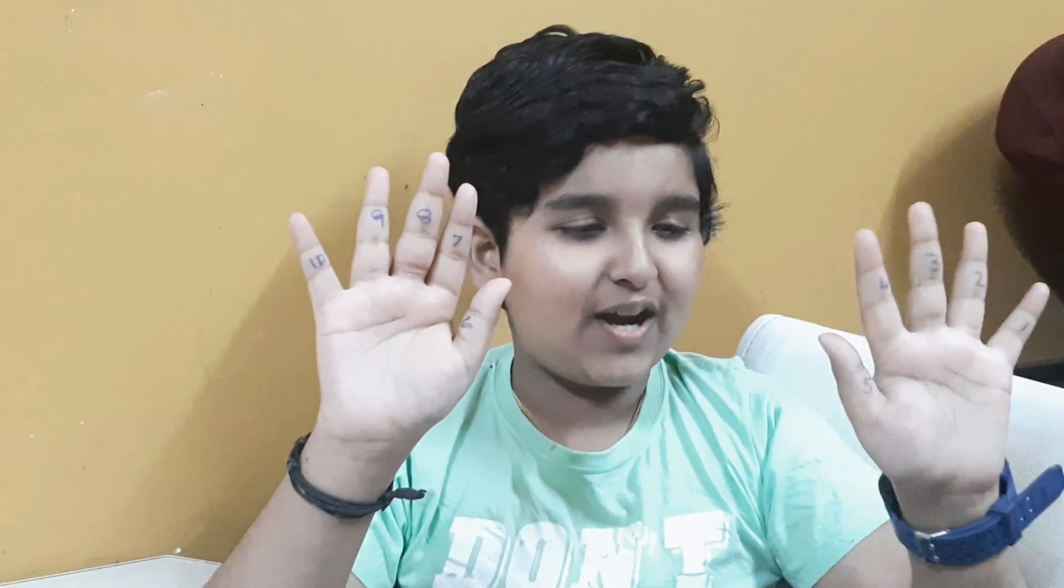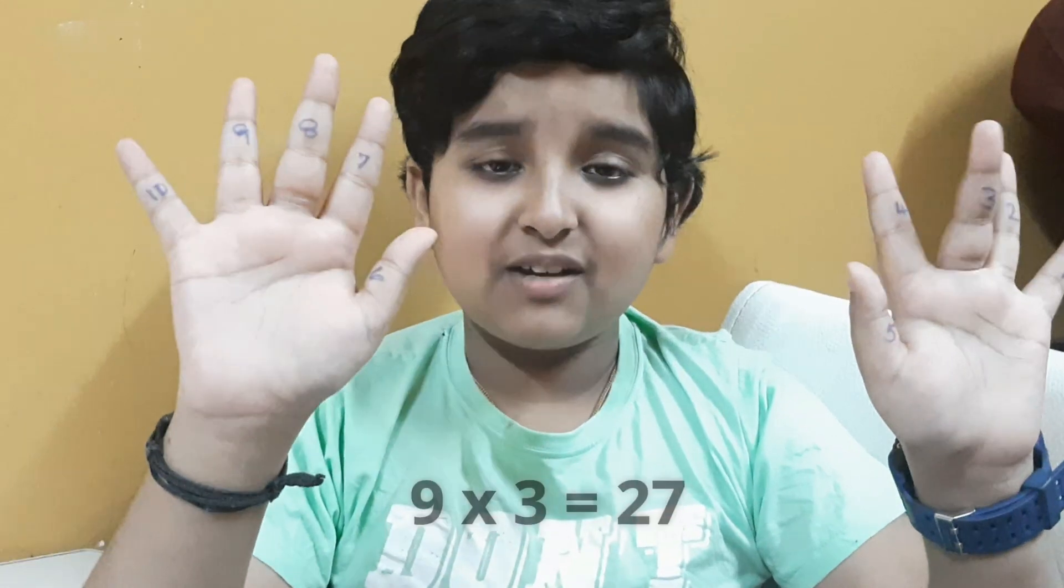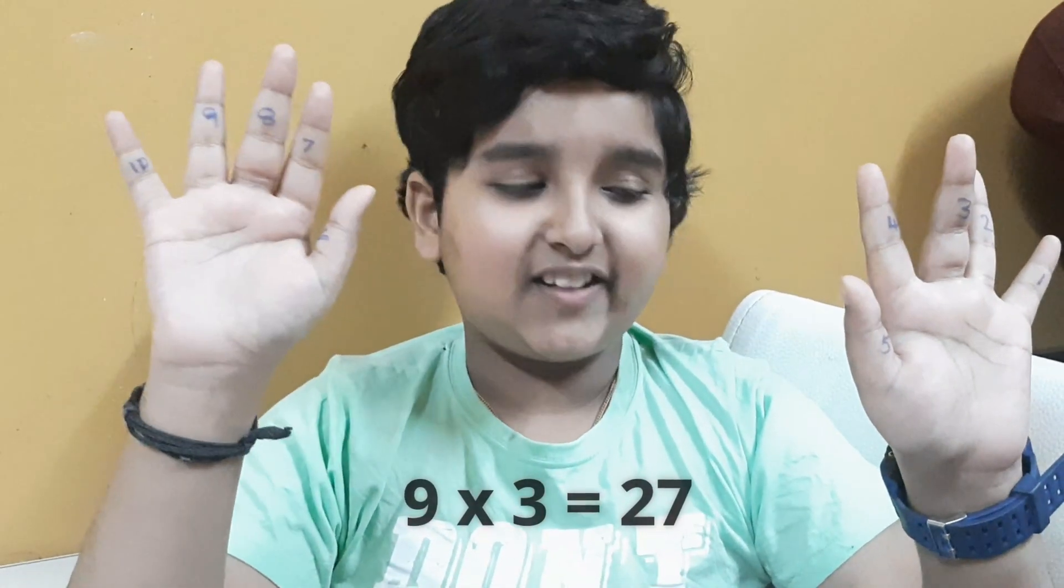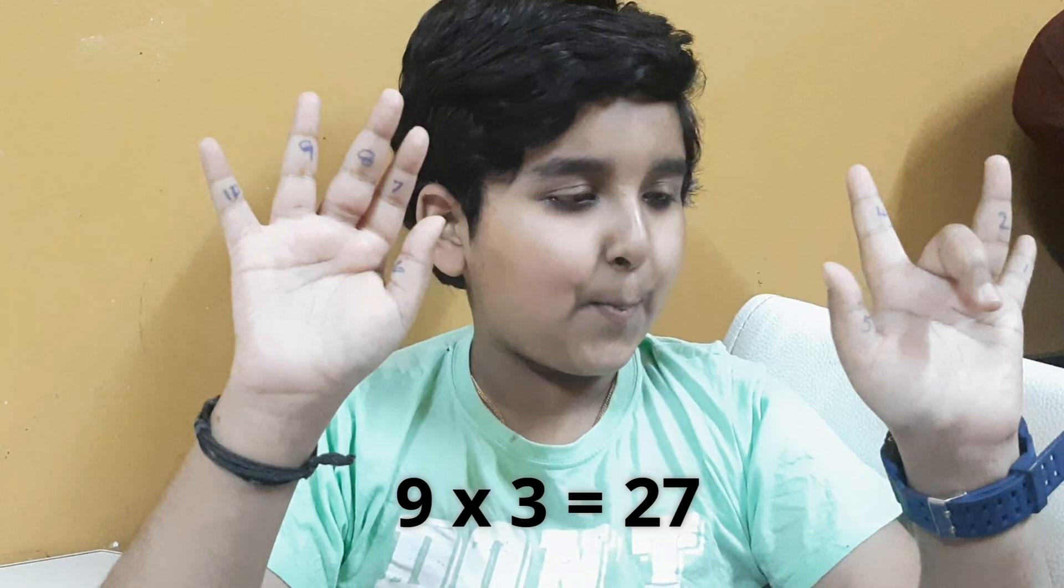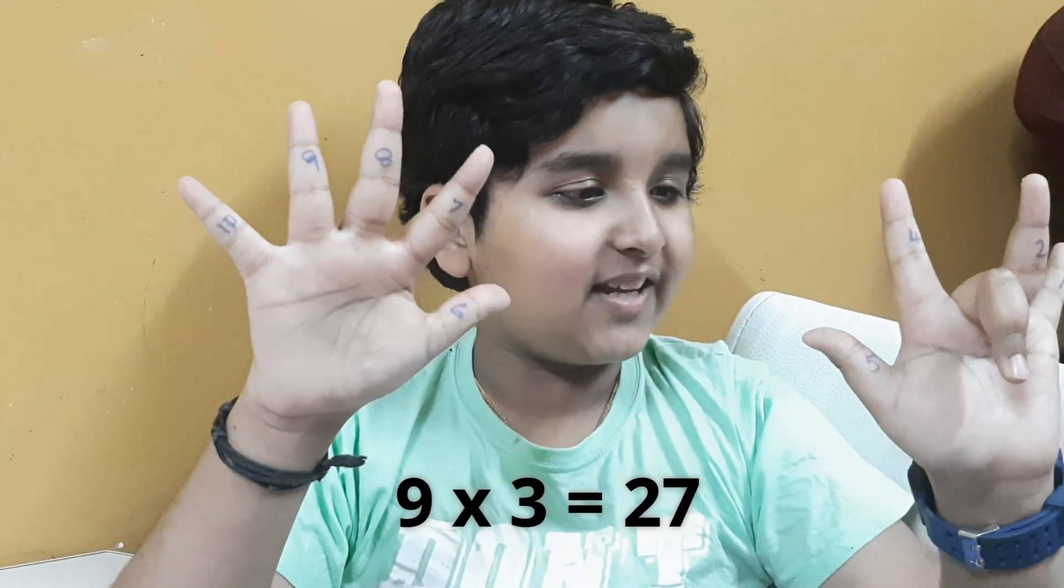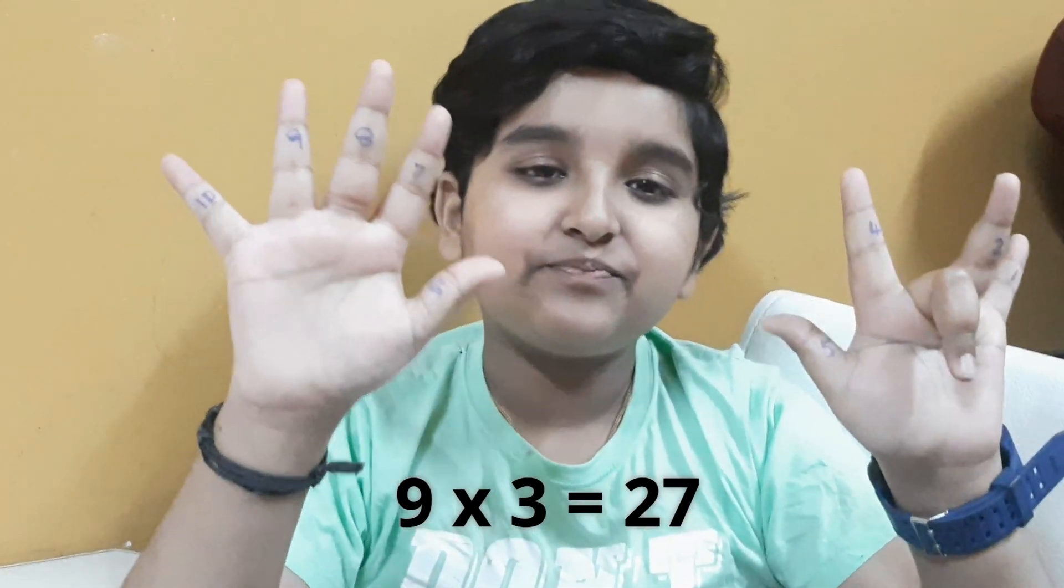At first you have to write 1 to 10 on our fingertips. First sum we are going to do is 9×3. For this we have to close the third finger. How many remains? Over there 2, over here 7. So the answer for 9×3 is 27.